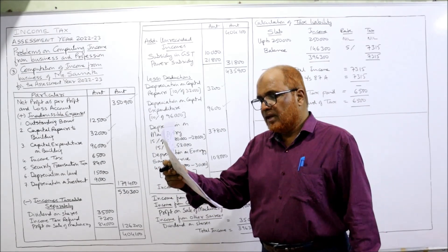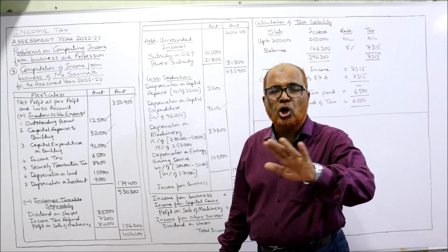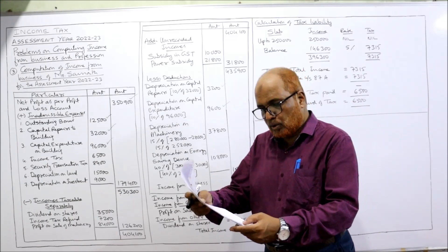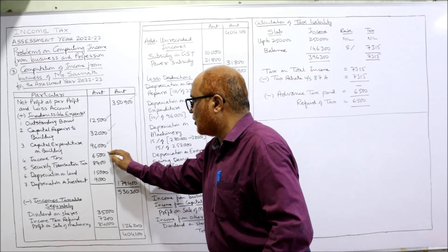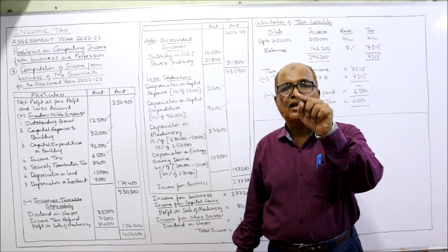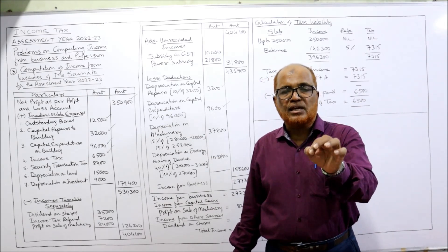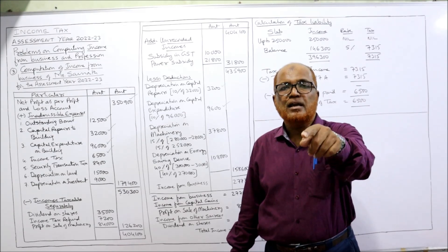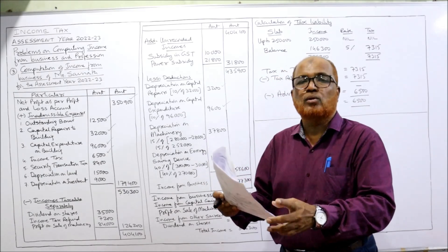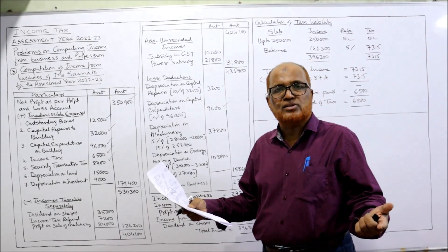Other expenses — allowed. Taxes regarding income tax: advance income tax paid should not be debited to the profit and loss account as per income tax rules; it is a personal tax, so it is disallowed. Advance income tax ₹6,500 — disallowed. Next, security transaction tax: it is allowed as deduction only if there is income on securities as part of the business. Here there is no income on securities, so the security transaction tax ₹8,400 is not allowed.